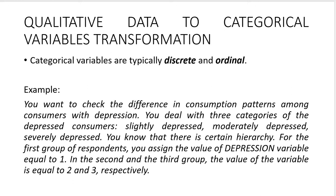In this case you would design a variable called 'depression.' For the first group — slightly depressed — you assign the value 1. For those who are moderately depressed, you assign the value 2, and for those severely depressed, the value 3. This variable is discrete: it can only take values 1, 2, or 3 — it's impossible to have something like 2.5. Whenever there is a hierarchy, it is suitable to transform qualitative data to quantitative data using categorical variables.